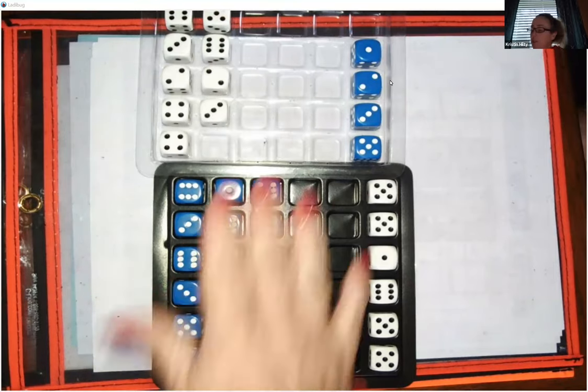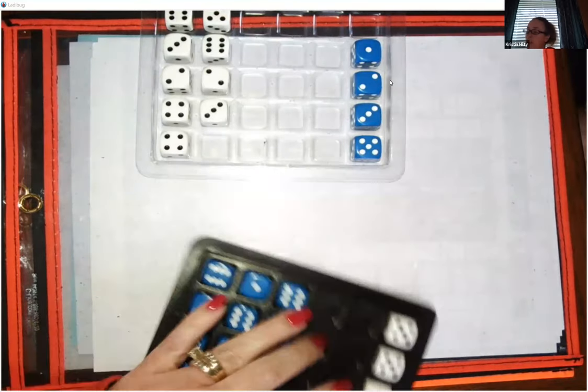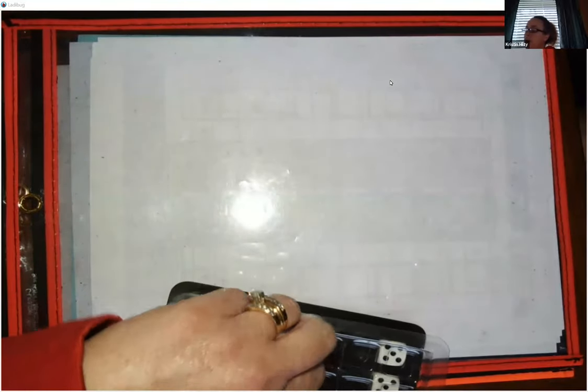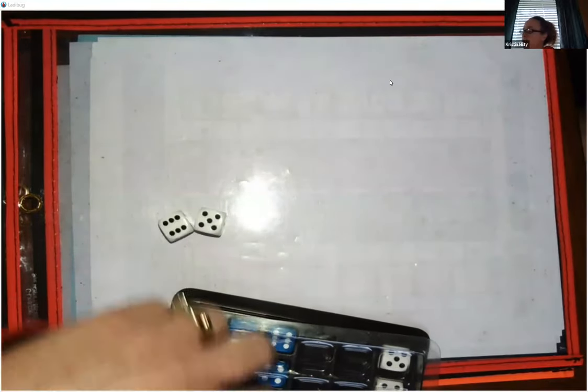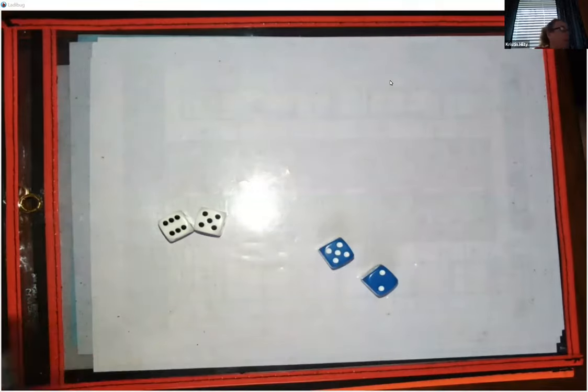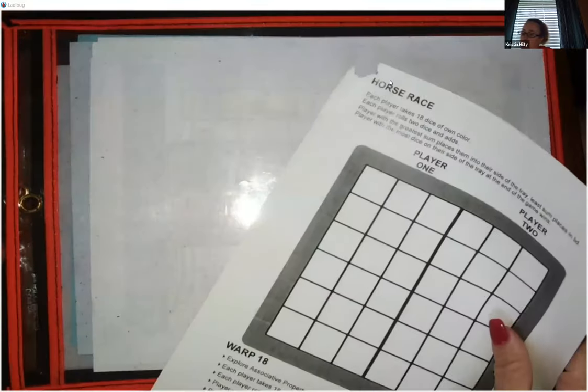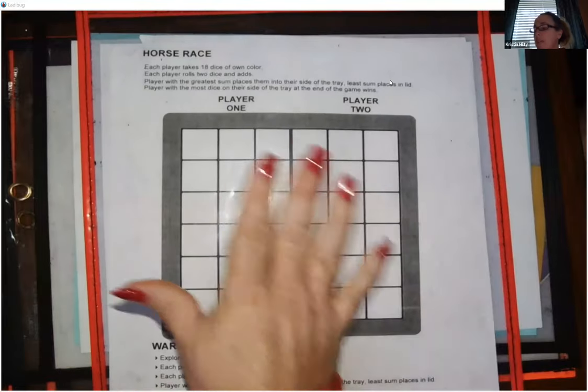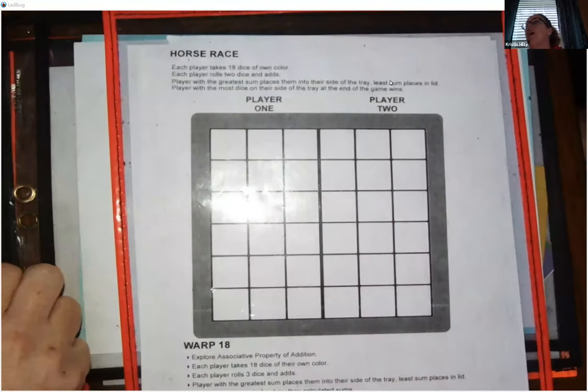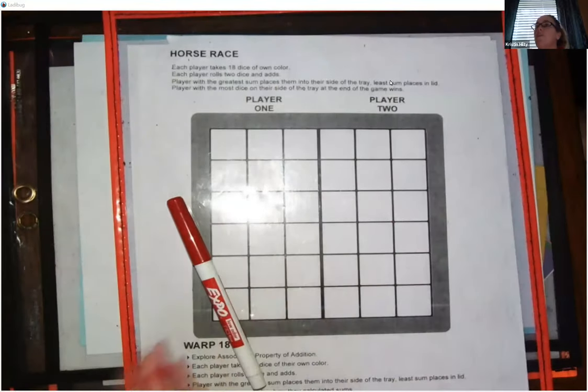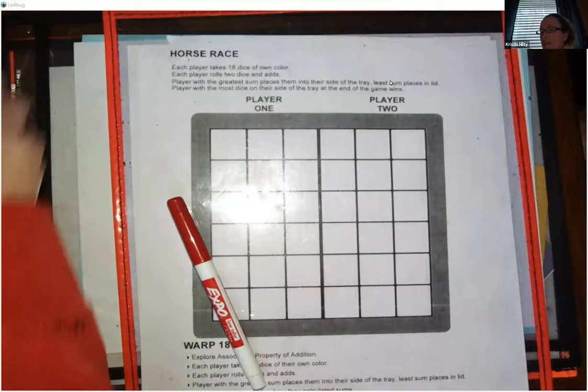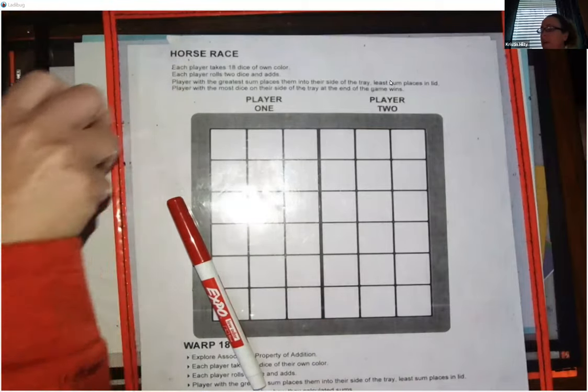As I said when we started this, if you don't have one of these dice trays, what you can do is if you just, all you need would be four dice in your house, if you can pull those out of games that you have. I'm actually going to put this inside of this sheet protector here. Sheet protectors make great dry erase boards. So as you download these game boards, if you have a sheet protector in your house, put them inside of a sheet protector and that way you can use it like a dry erase board and you don't have to keep making new copies of that game board.